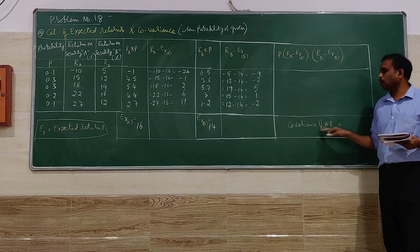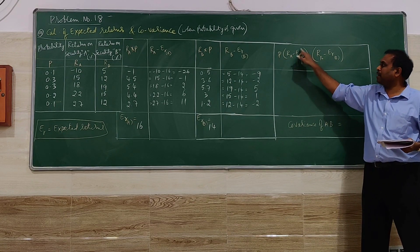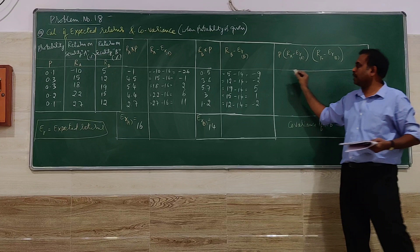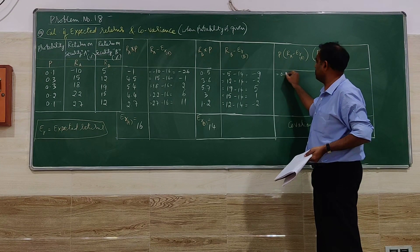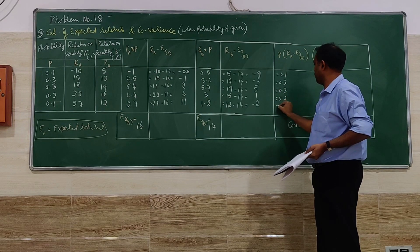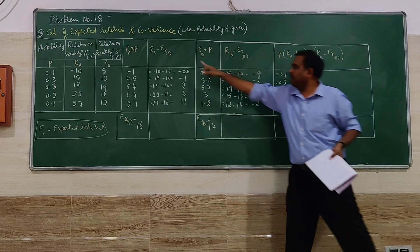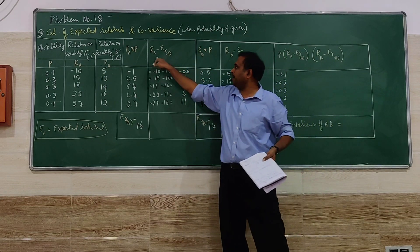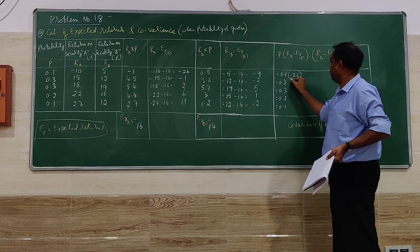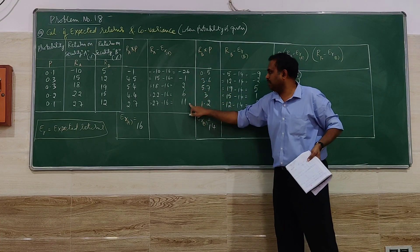What is the covariance of A and B? I have the values over here. Probability into (RA minus E(RA)) multiplied by (RB minus E(RB)). Let me substitute now with the probability first. I return the probability first, then RA minus E(RA). I have calculated here RA minus E(RA). I have the values over here: minus 26, minus 1, 2, 6, and 11. So I have taken all these values over here.